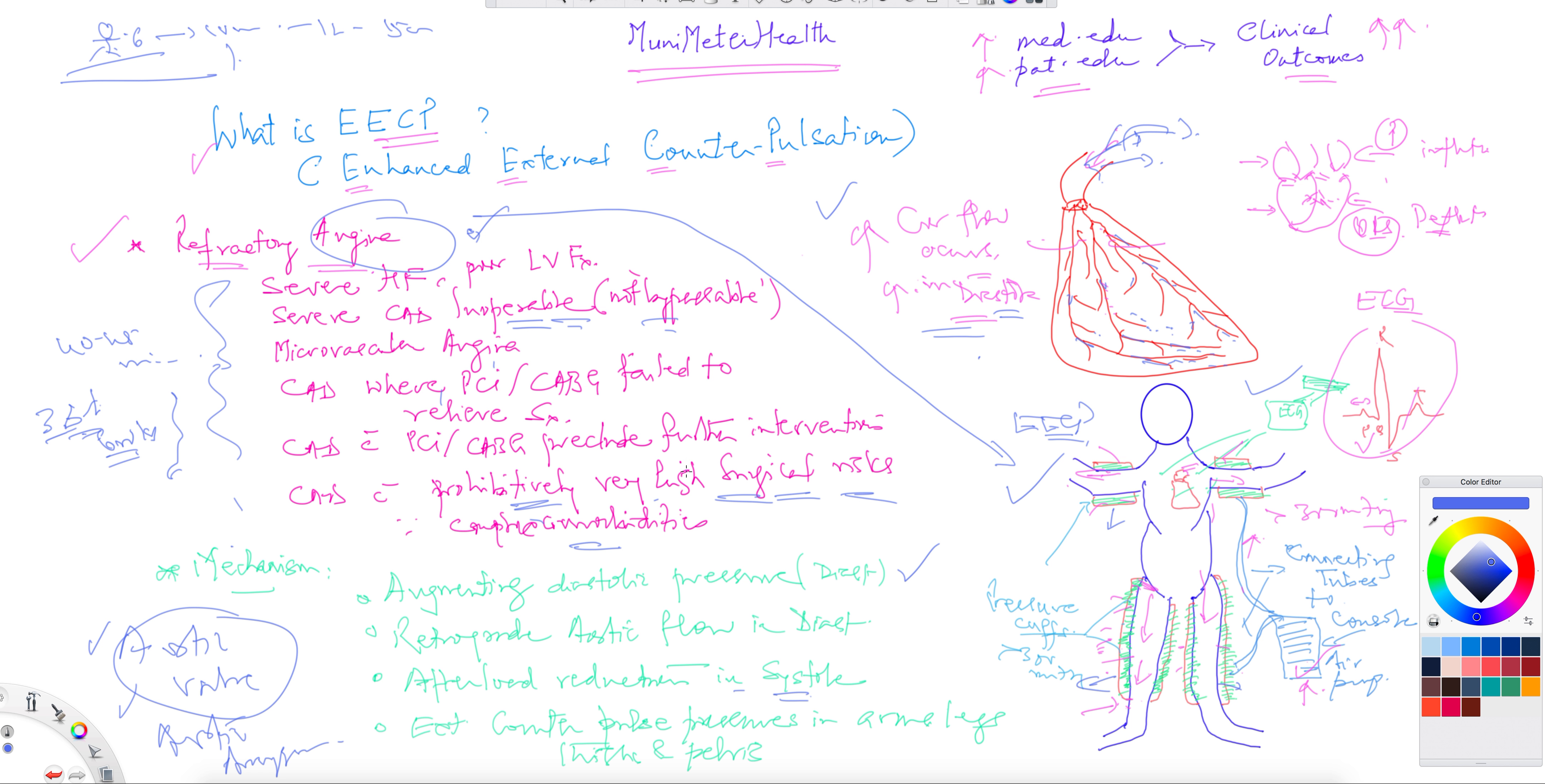This is a quick review on enhanced external counterpulsations. I'm sure it will be on the boards one way or the other on the exams. In practice also, not many centers are putting this machine in their practices. Not many hospitals have it because it's hard to find so many refractory angina patients. Whenever they are, they can look for these EECP services which are available in certain doctors' clinics or hospitals. Consult with your cardiologist, make sure there are no contraindications like the aortic valve or aortic aneurysm issues, and they can be prescribed EECP.